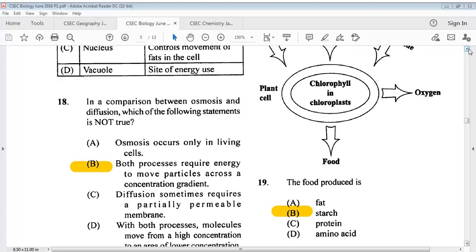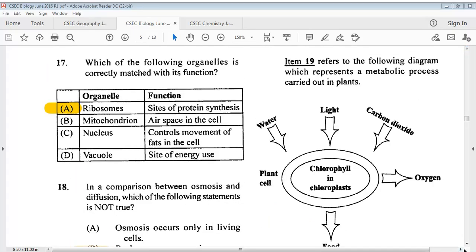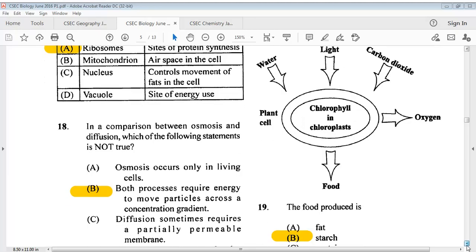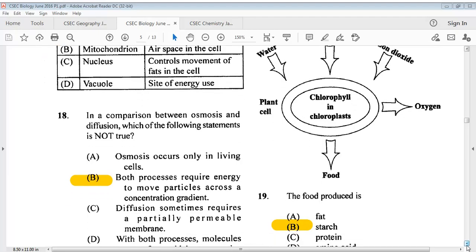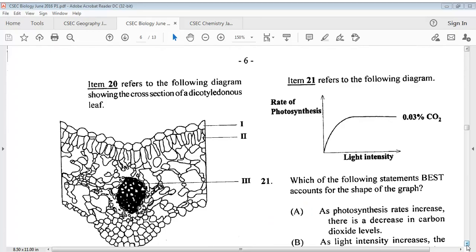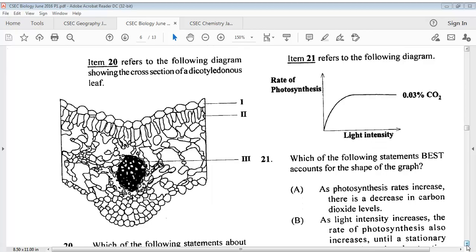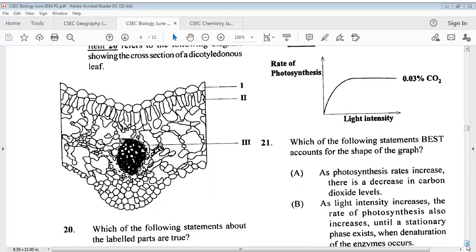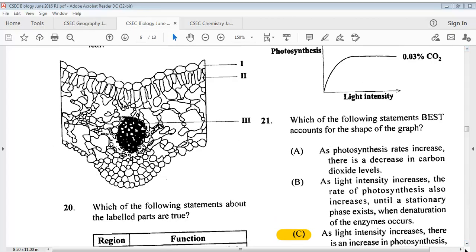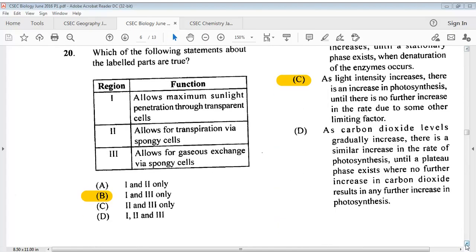For question 19, item 19 refers to the following diagram which represents a metabolic process carried out in plants. The question says the food produced is? The answer is B, starch. For question 20, here we have item 20. We have to take a look at the diagram. It says which of the following statements about the labeled parts are true? Remember we have 1, 2, and 3. The answer is for 20, B, 1 and 3 only.